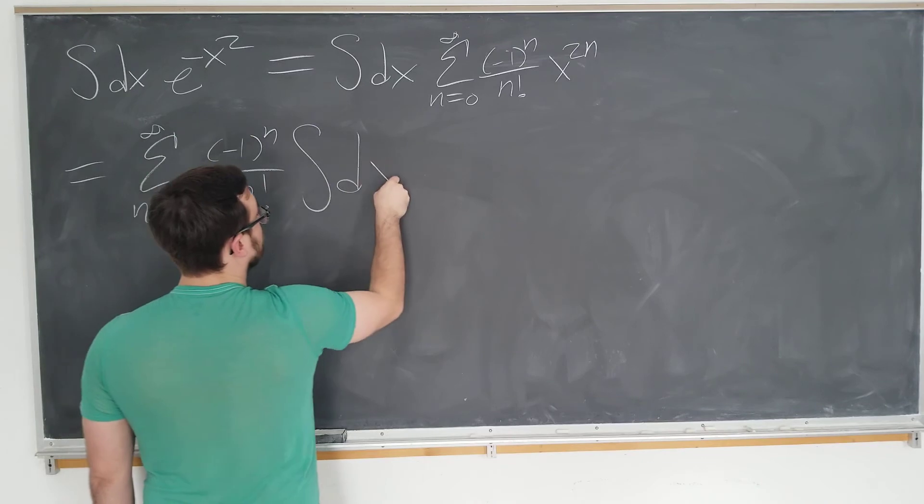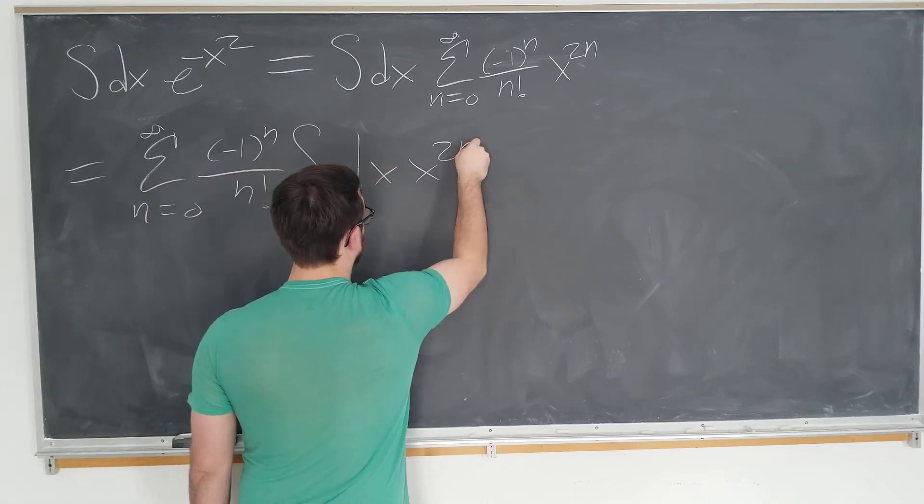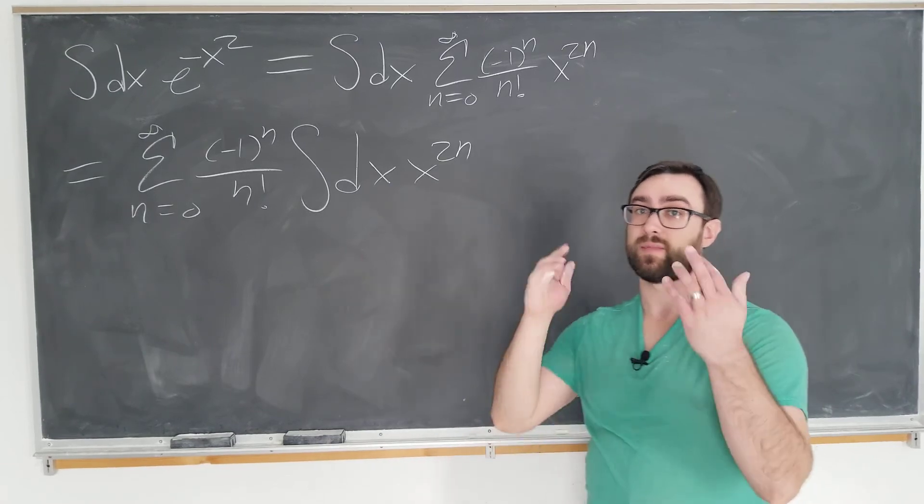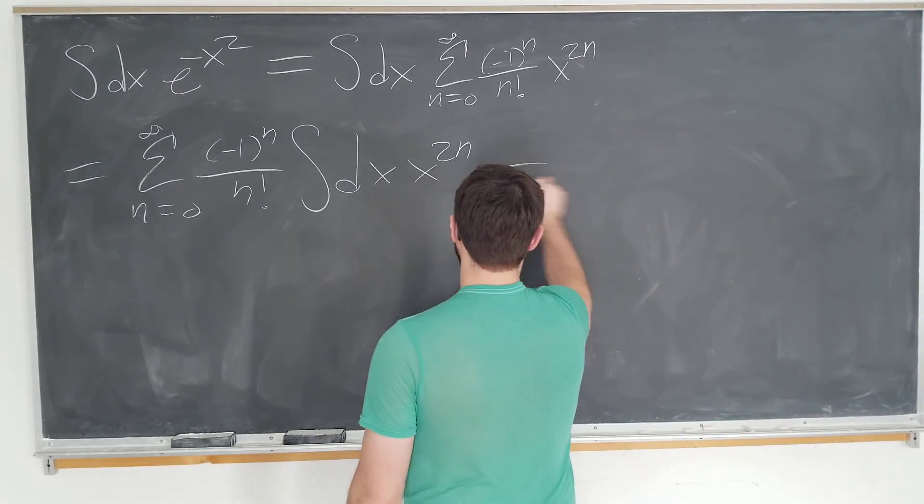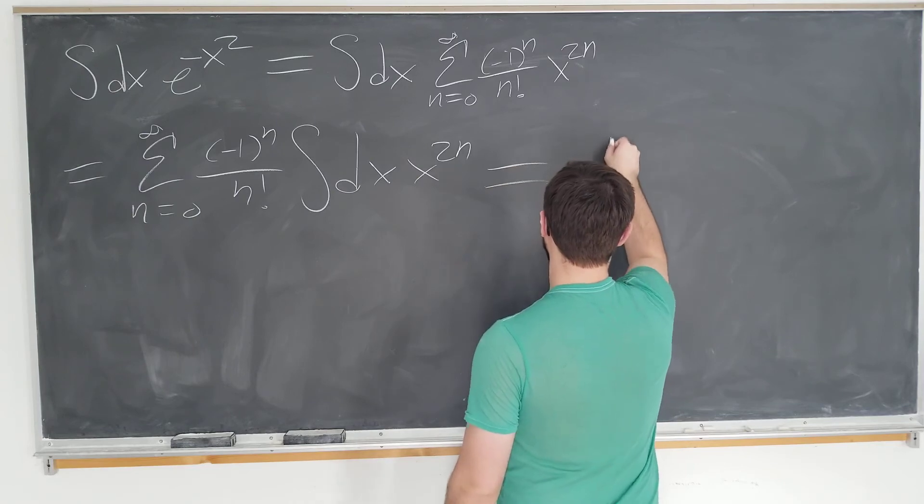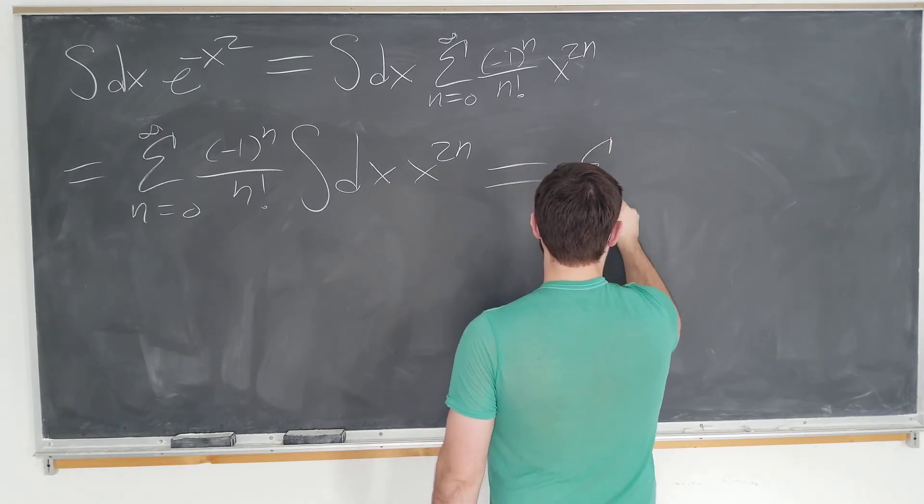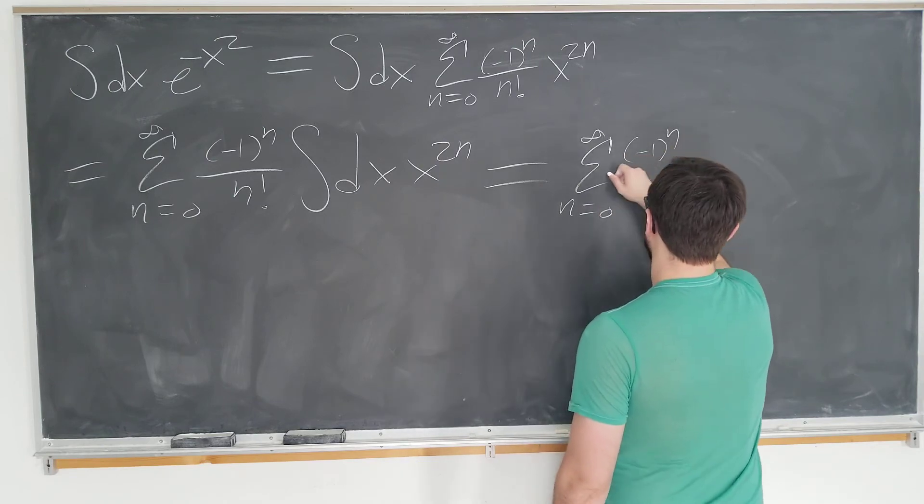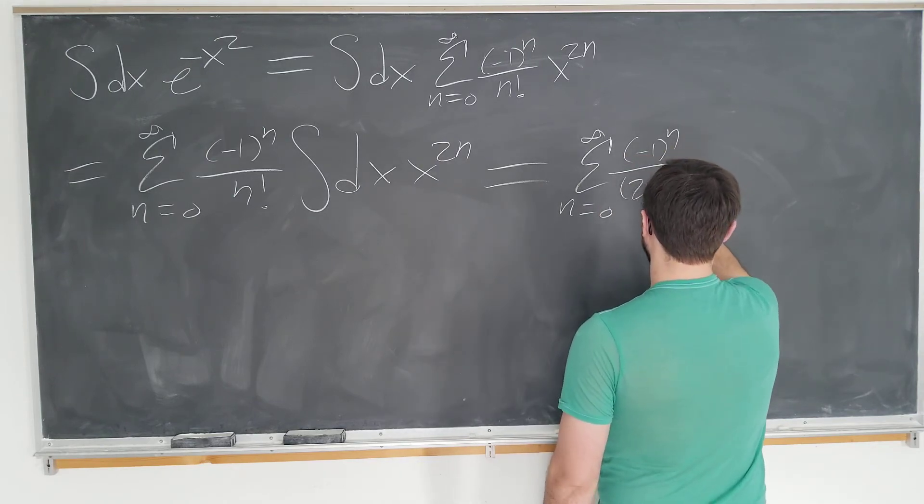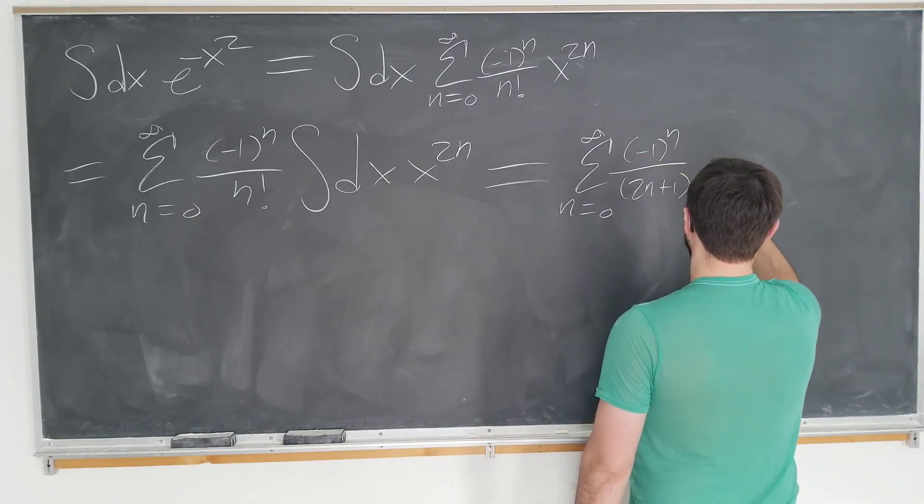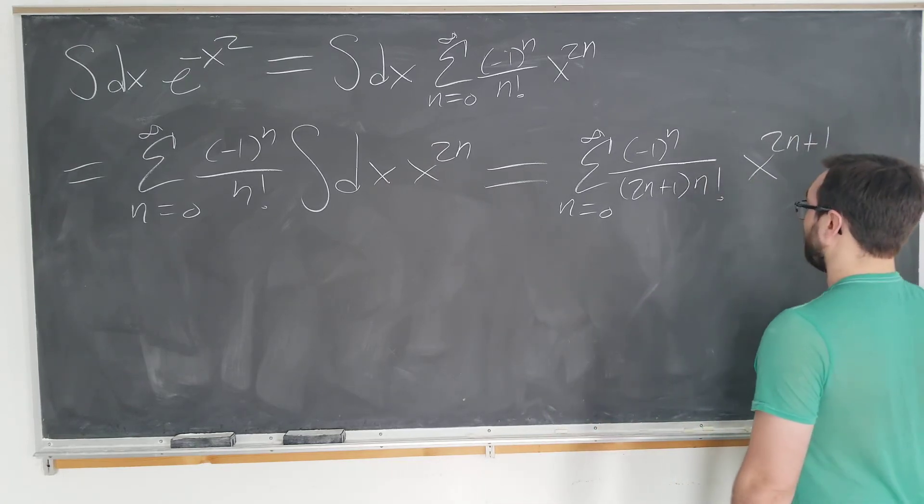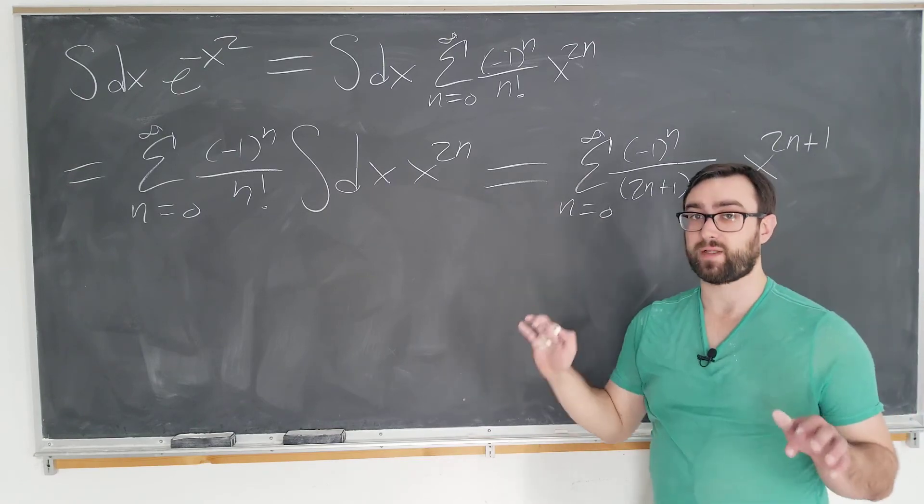Becomes the sum as n goes from zero to infinity of minus 1 to the n over n factorial of the integral of x to the 2n which we can do very easily since we know we just have to increase the power by one and divide by the new power. So our final answer becomes sum as n goes from zero to infinity minus 1 to the n over 2n plus 1 n factorial. That's the new coefficient times x to the 2n plus 1 power. This is the final answer.